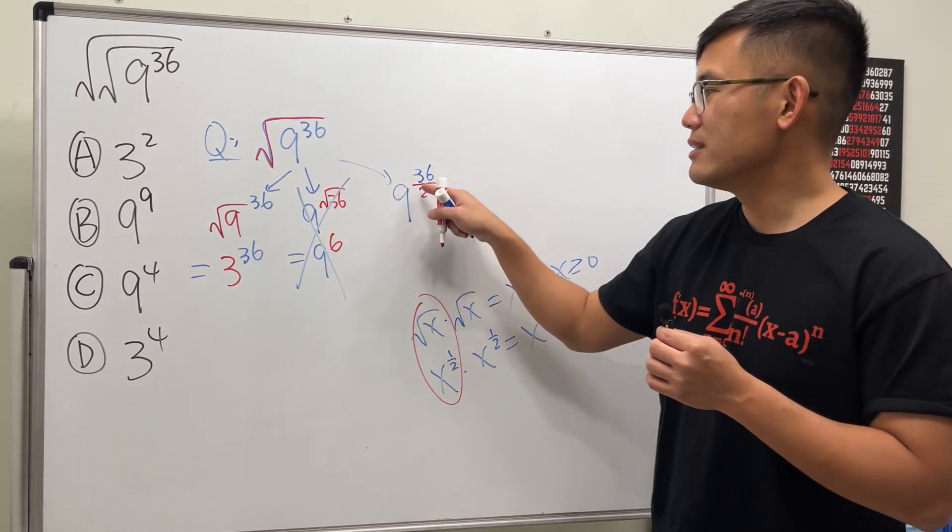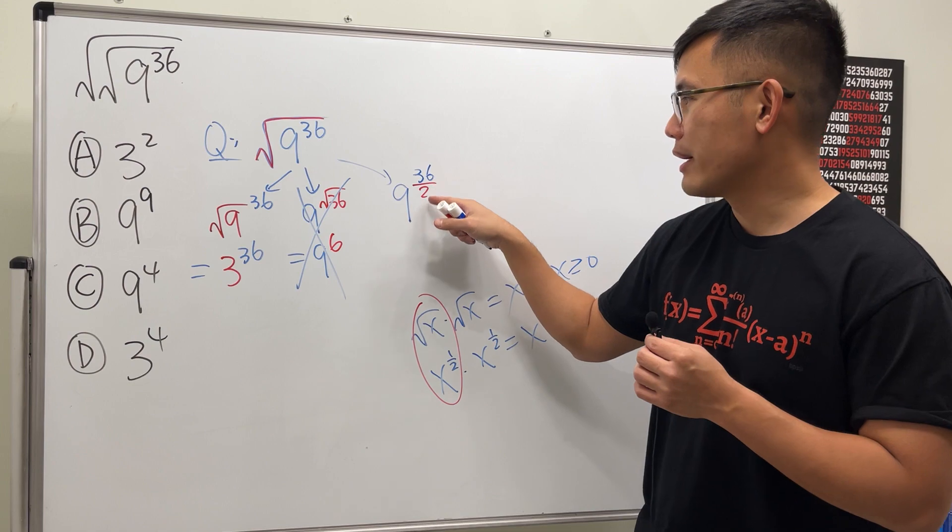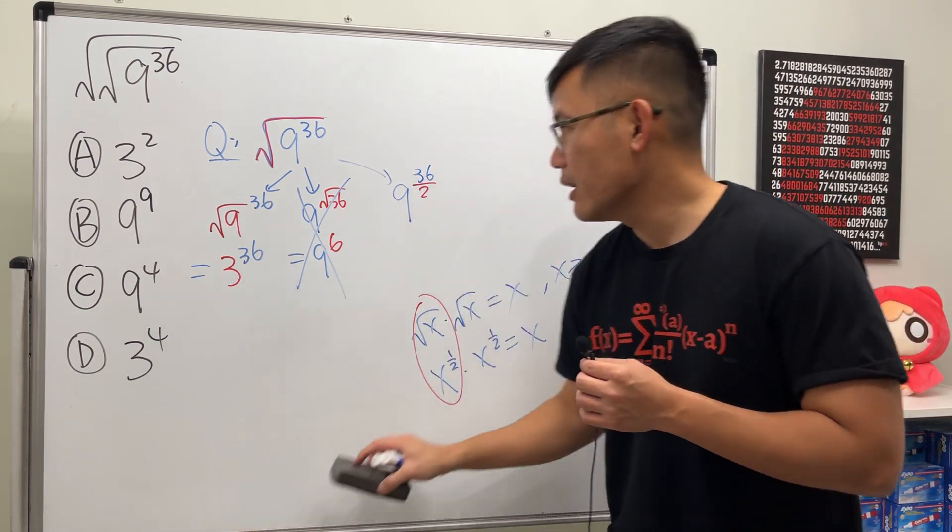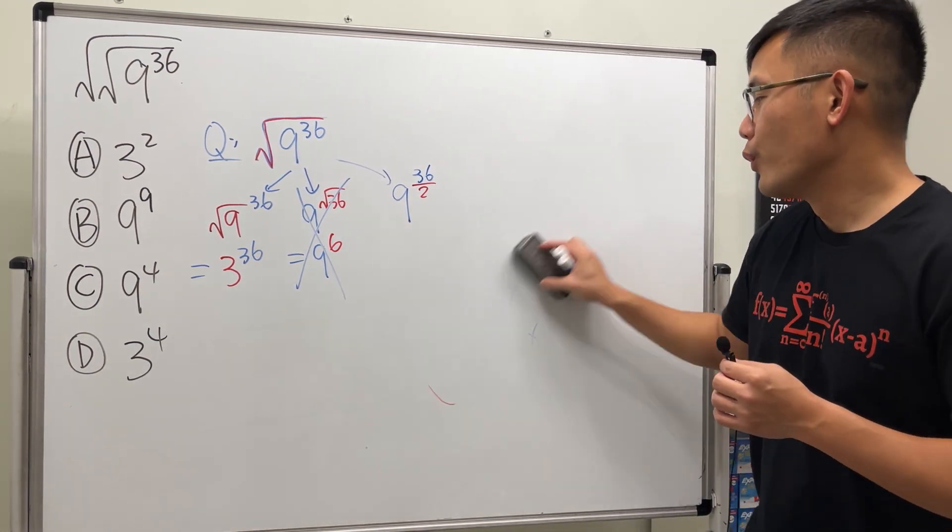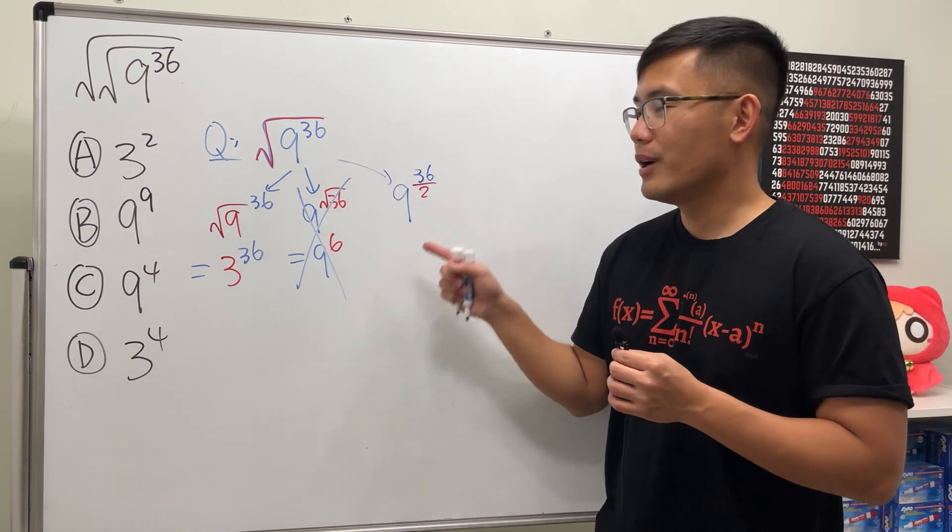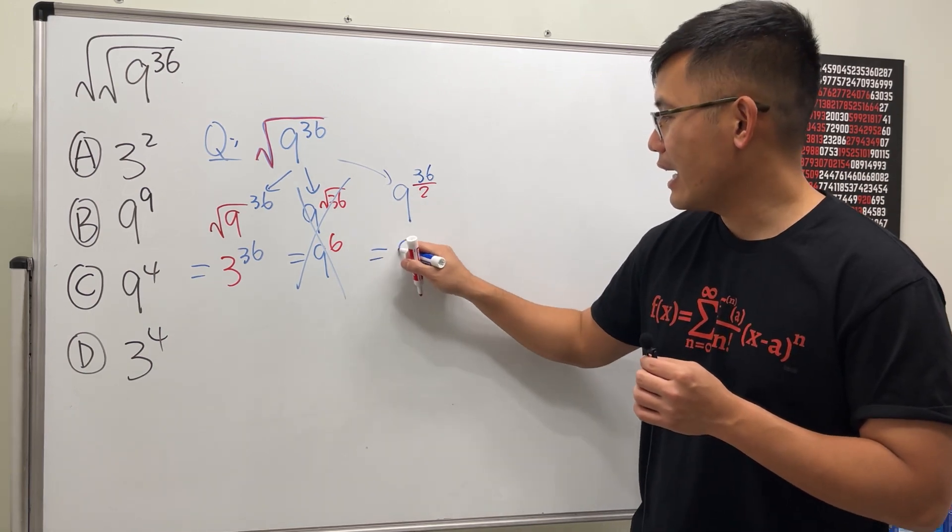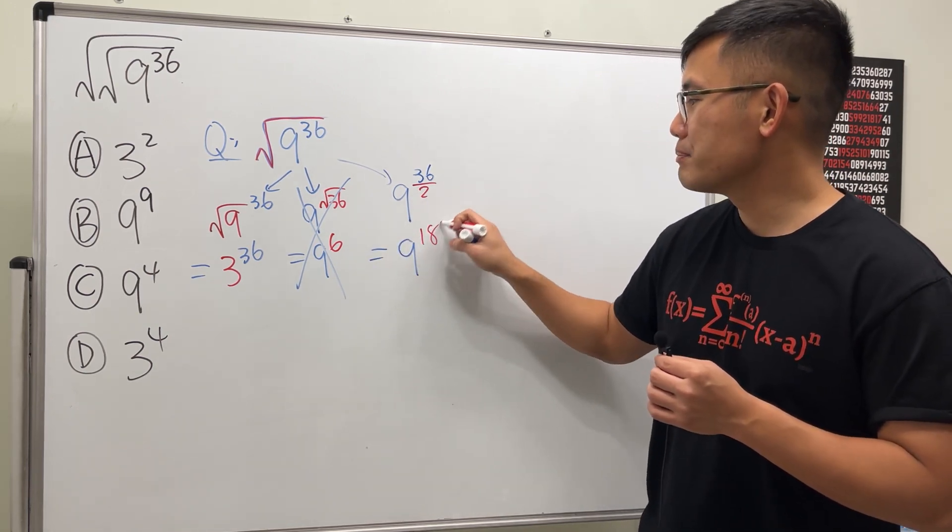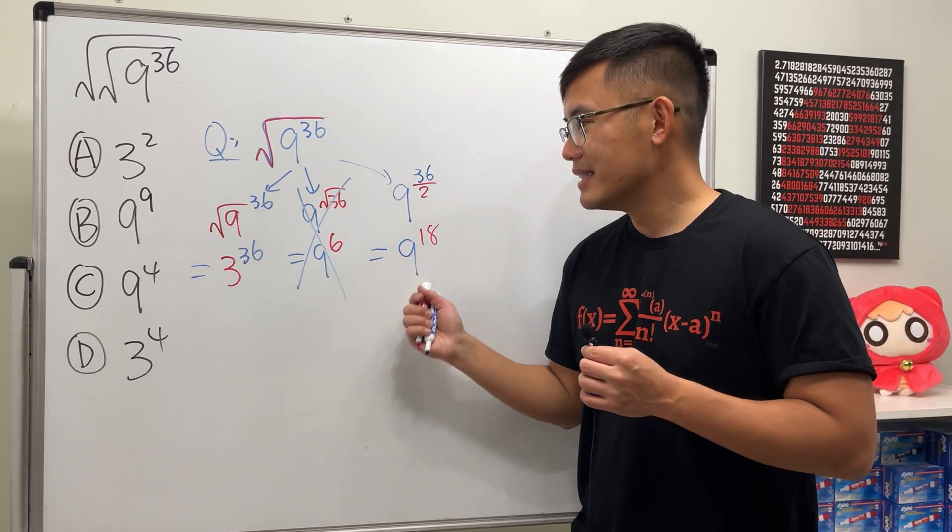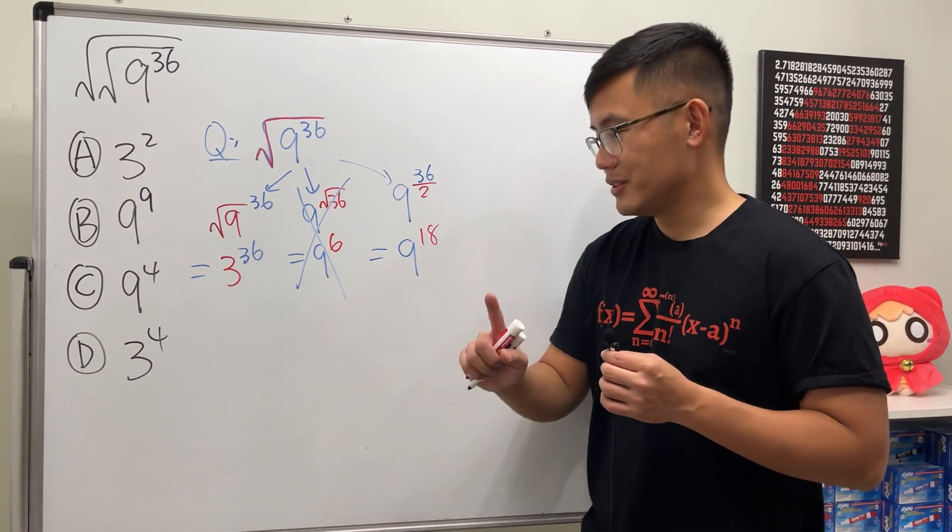So this right here is the half power, and you multiply that with 36. Therefore, if you want to fix the power, we will end up with 9 raised to the 18th power. And in fact, this and that are the same thing. Check this out.